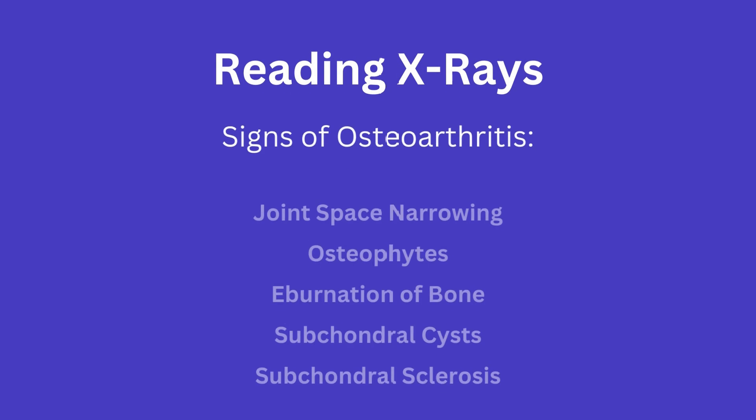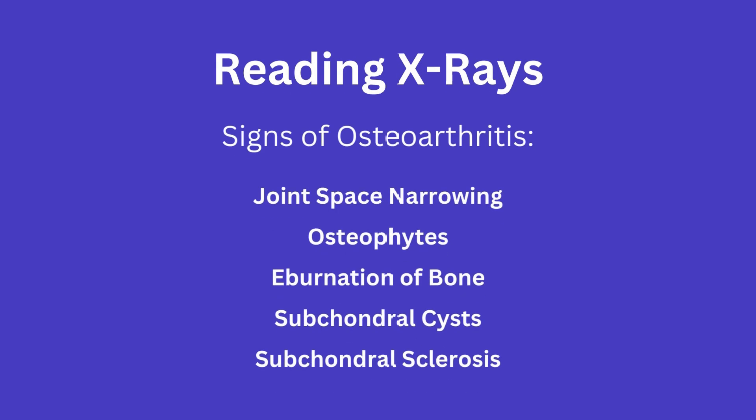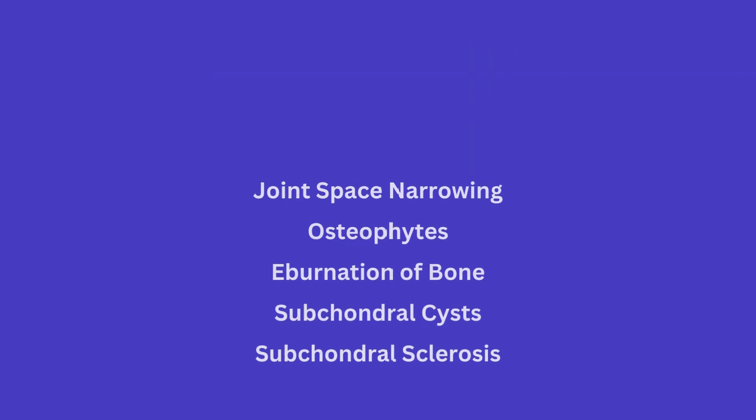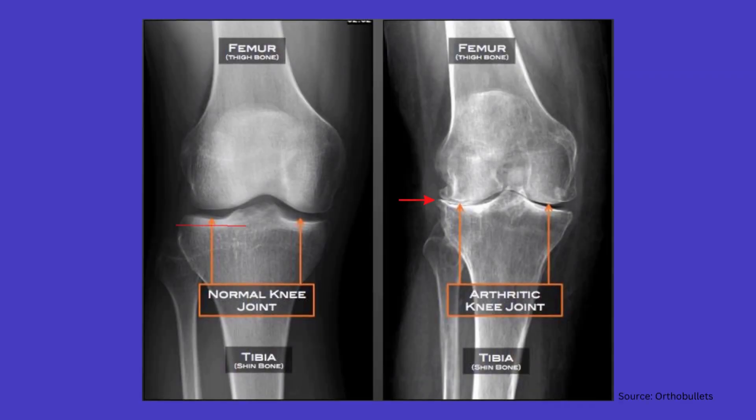First, just to list out the signs you will want to name if asked: these are going to be joint space narrowing, osteophytes or bone spurs, eburnation, and the presence of subchondral sclerosis and subchondral cysts.